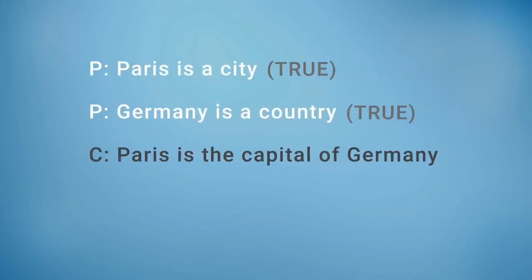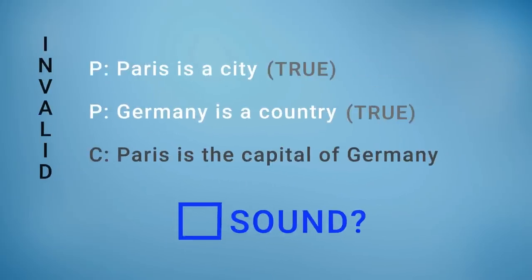Here is an argument where the premises are true, but the argument is invalid — so the argument is not sound. Paris is a city. Germany is a country. Conclusion: Paris is the capital of Germany. It's not sound because that conclusion is not guaranteed by the truth of the premises.